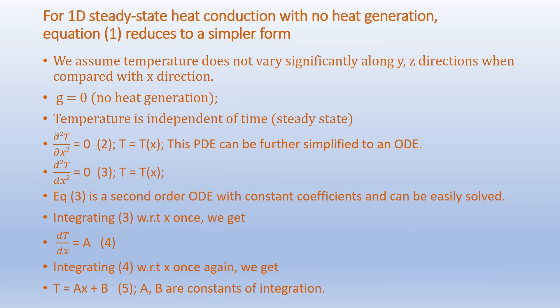For 1D steady-state heat conduction with no heat generation, the equation reduces to a simpler form. We assume temperature does not vary significantly along the y and z directions compared with the x direction. There is no heat generation, meaning G equals zero. The temperature is also independent of time as we assume a steady state. So our equation reduces to ∂²T/∂x² = 0.